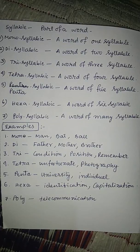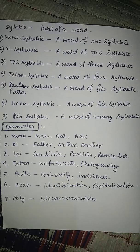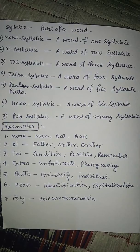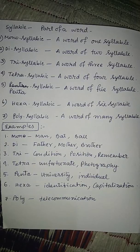Monosyllabic — a word of one syllable. Disyllabic — a word of two syllables. Trisyllabic — a word of three syllables. Tetrasyllabic — a word of four syllables. Pentasyllabic — a word of five syllables. Hexasyllabic — a word of six syllables. Polysyllabic — a word of many syllables.